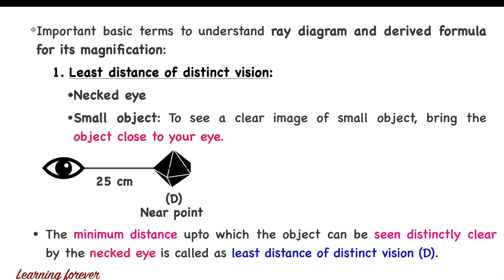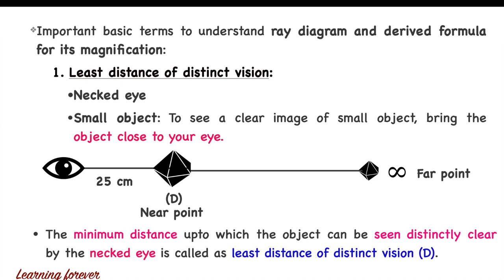Now observe what happens when the diamond is moved far away from the eye. It is visible, but the size of the diamond decreases and we cannot see its clear image. The point far away from the eye where the object is visible is called the far point. Since there is no limit to how far you can see the object, this point is also called infinity. Through the naked eye, we can clearly see an object if it is kept within the range of 25 centimeters from the eye, which is called the least distance of distinct vision.